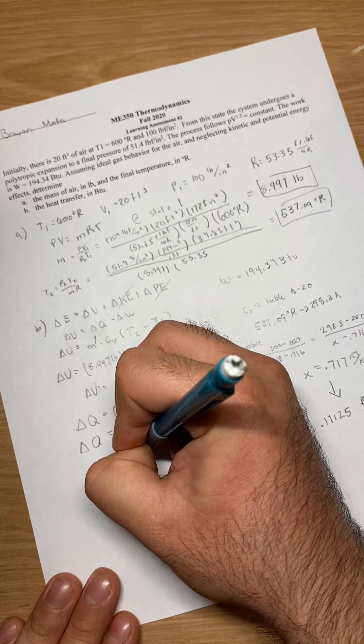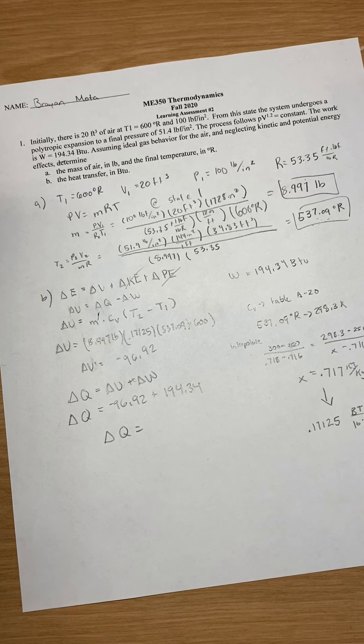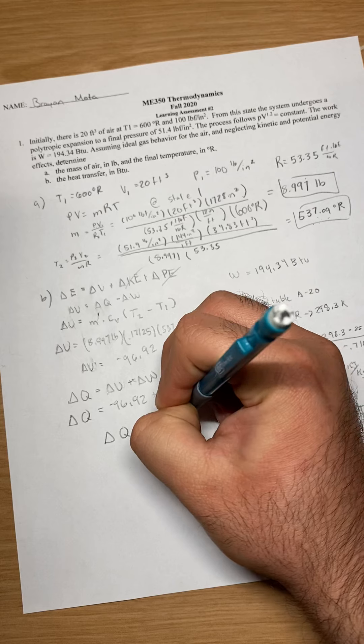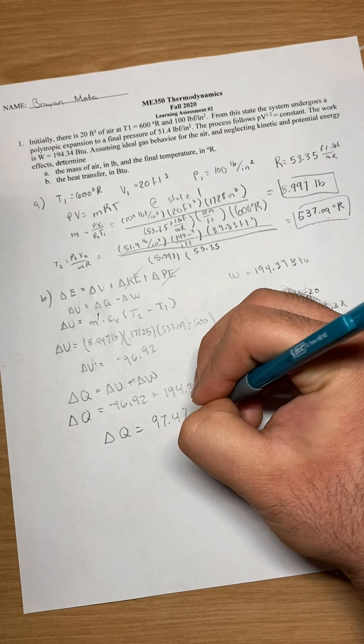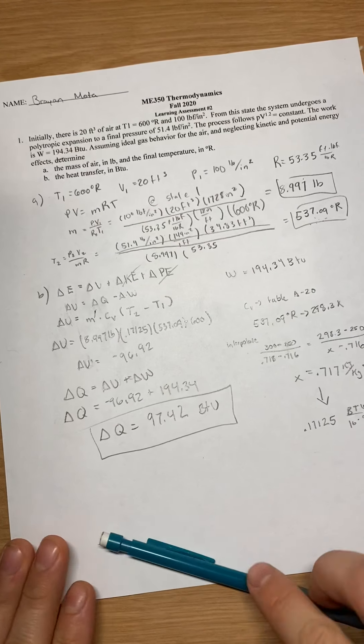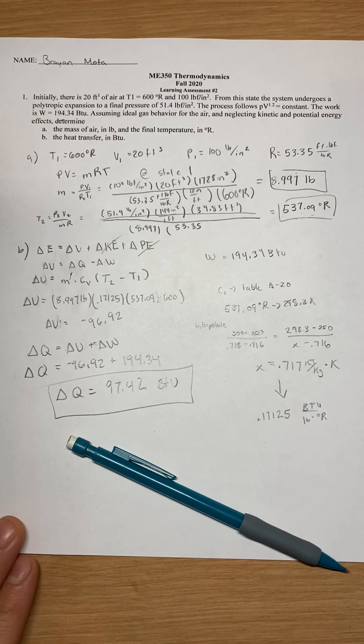My delta Q turns out to be, if I plug that in the calculator, that gives me 97.42, and this is BTU. Okay.